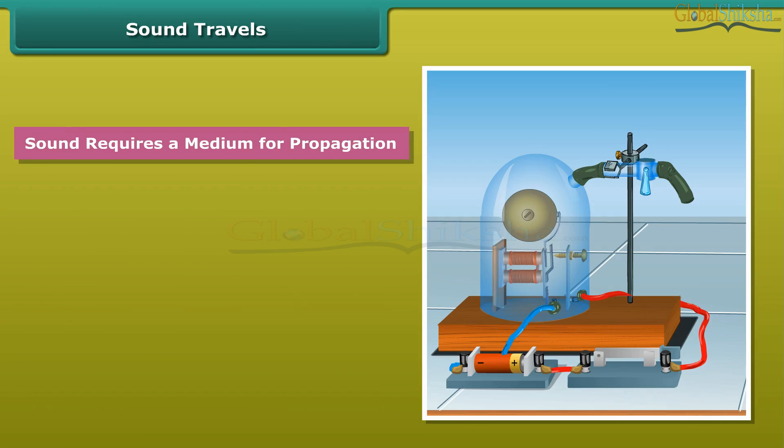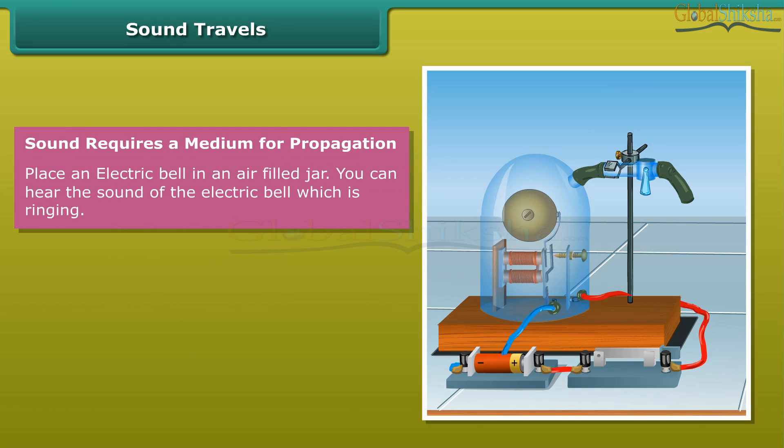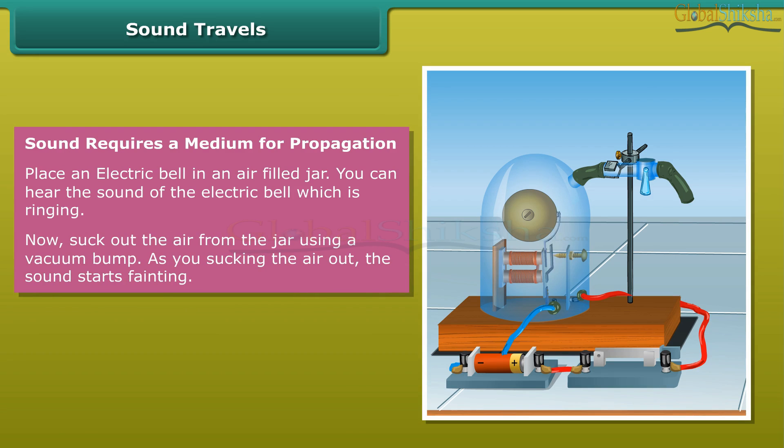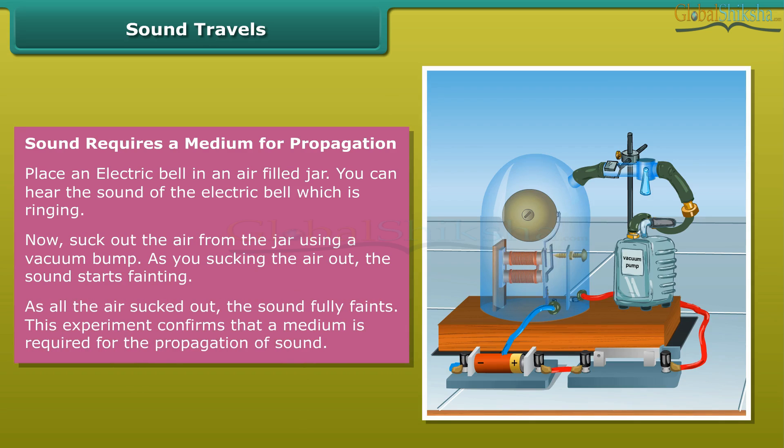Sound requires a medium for propagation. Place an electric bell in an air-filled jar. You can hear the sound of the electric bell which is ringing. Now suck out the air from the jar using the vacuum pump. As you suck the air out, the sound starts fainting. As all the air sucked out, the sound fully fades. This experiment confirms that a medium is required for the propagation of sound.